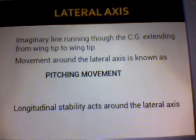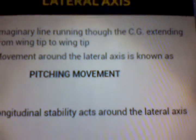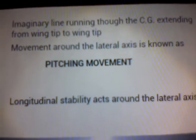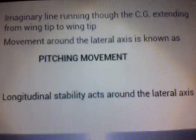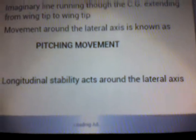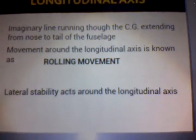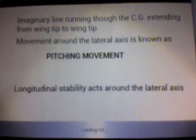That's it for the longitudinal axis. Now the lateral axis — it is the line running through the CG, extending from the wingtip to wingtip, as explained. The movement around it is called the pitching movement. And the longitudinal stability acts around the lateral axis. So what you want to know is it's opposite — you're not going to have longitudinal stability acting around the longitudinal axis; you're going to have lateral stability, and it's opposite around the lateral axis.